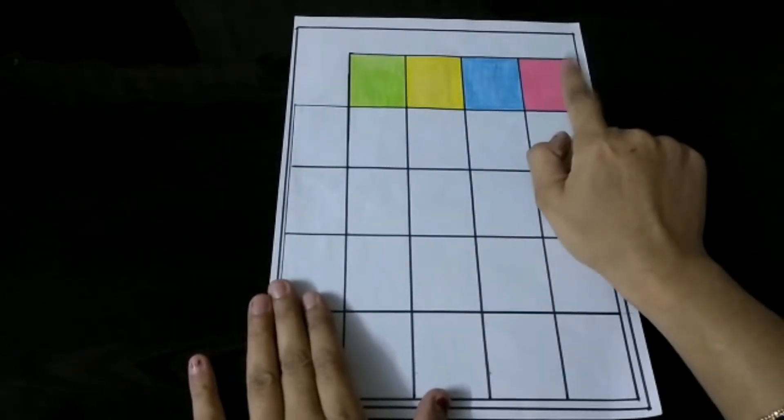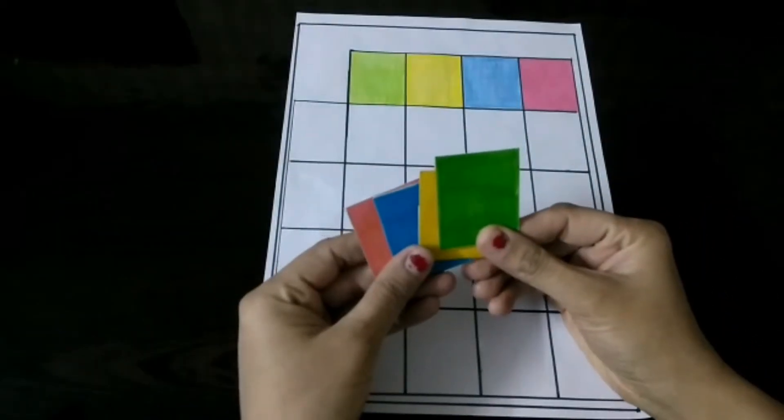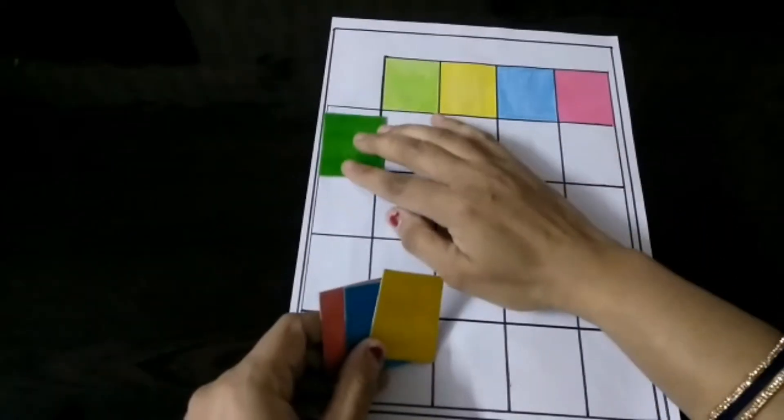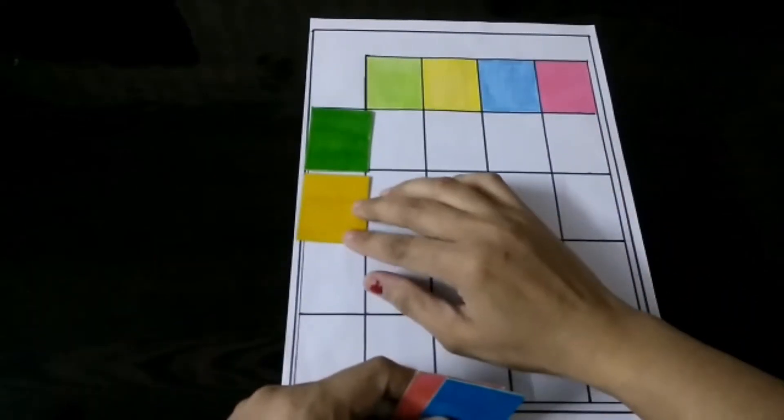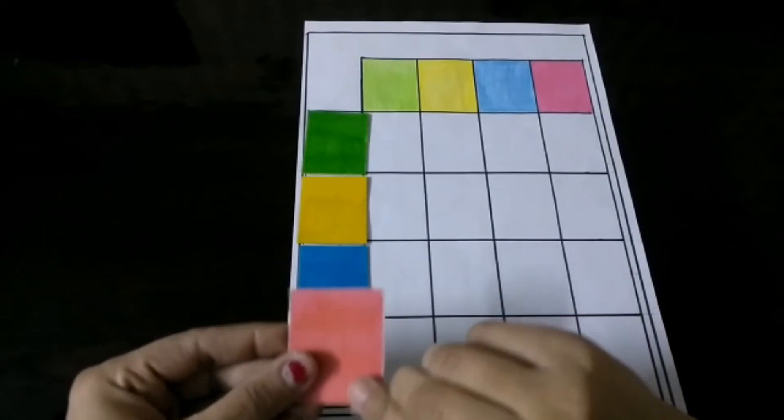Along with this, I have made the same colors on a cardboard or a thick sheet as you could see, so I can place them here like this. The benefit of making them on a cardboard is